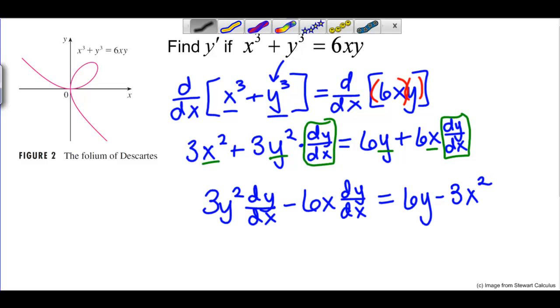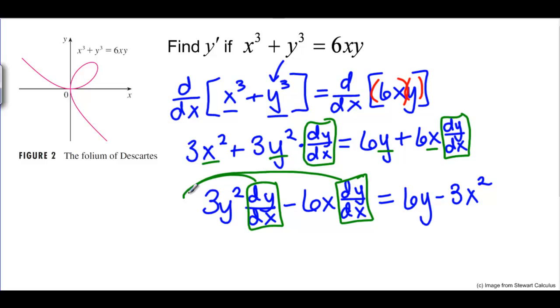Now we have a dy/dx in every term on the left side of the equation. That means we can factor it out front so we have dy/dx times 3y squared minus 6x equals 6y minus 3x squared.